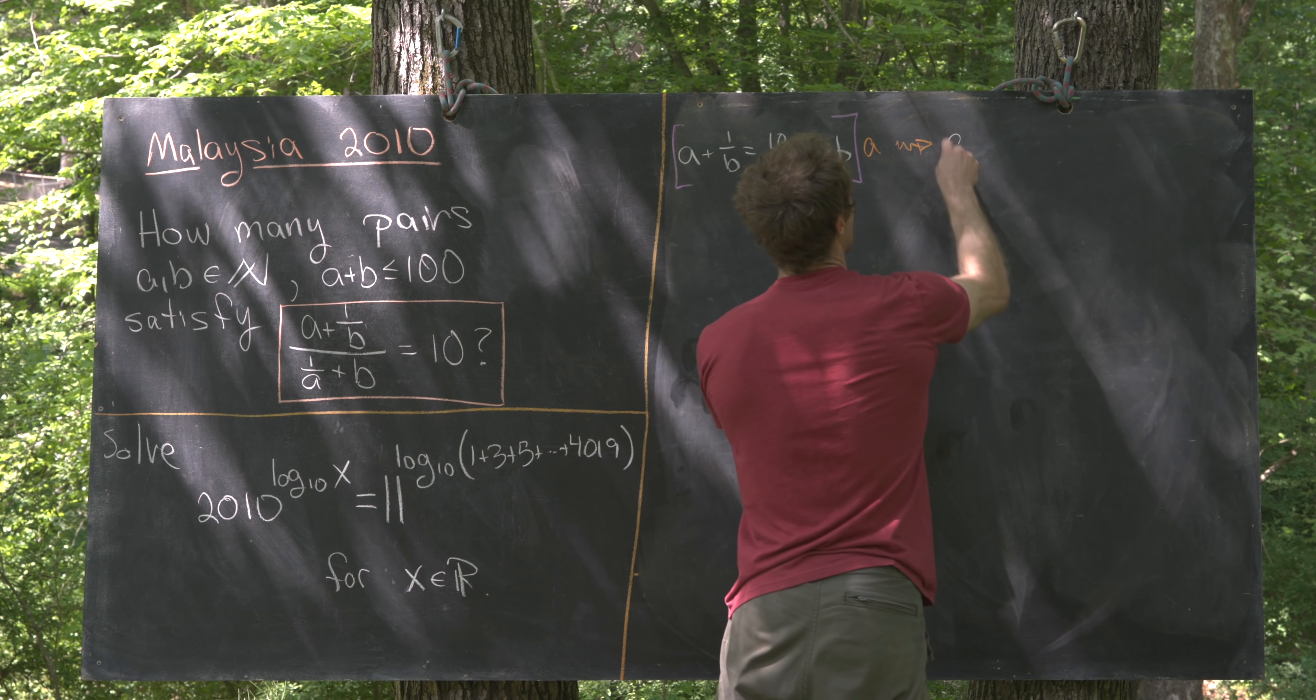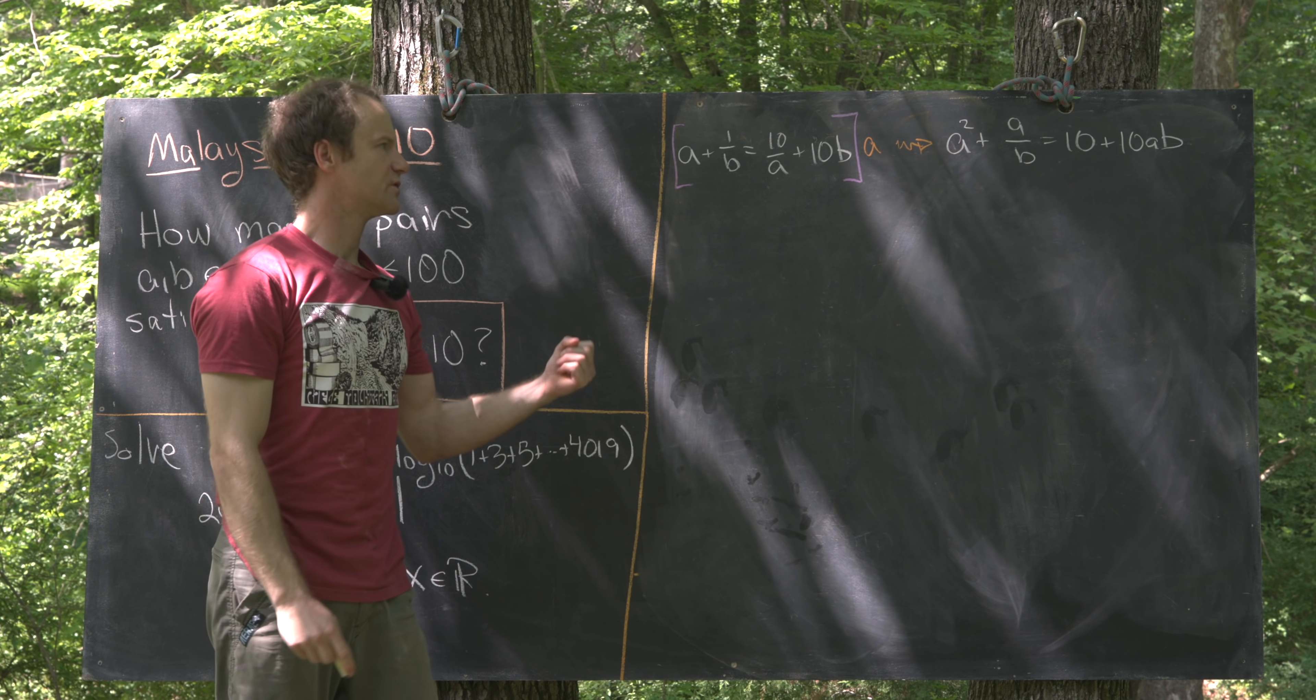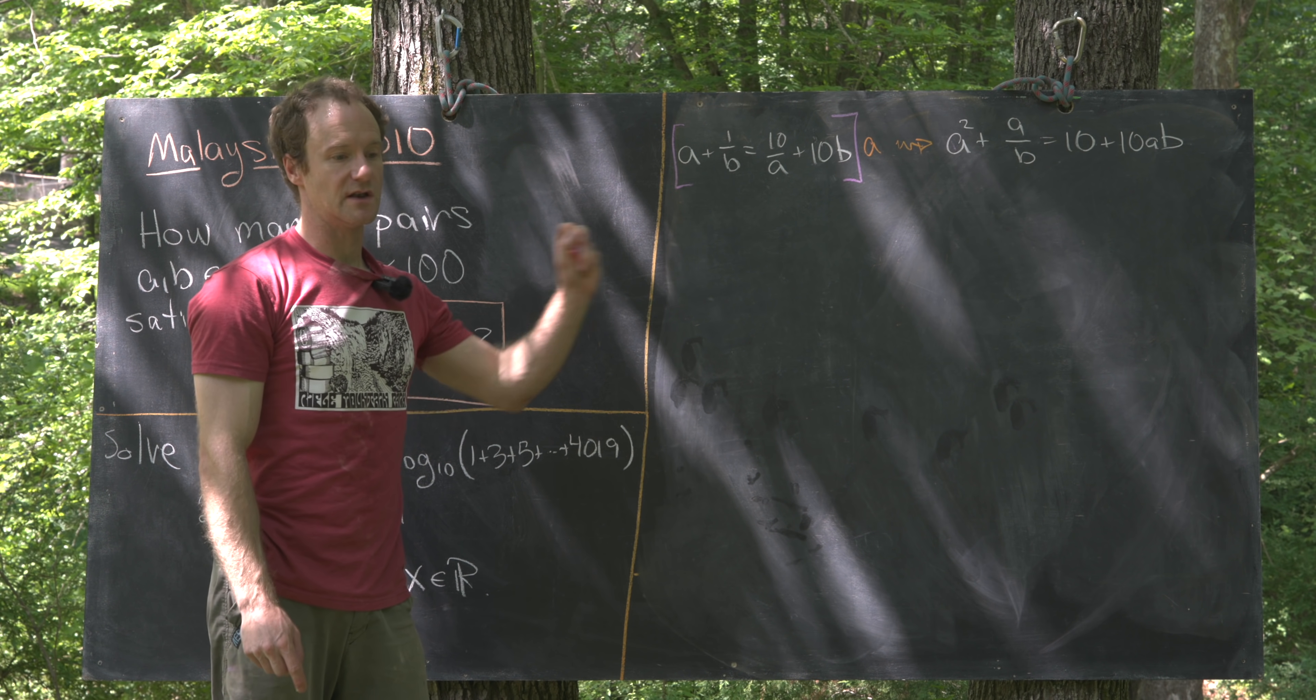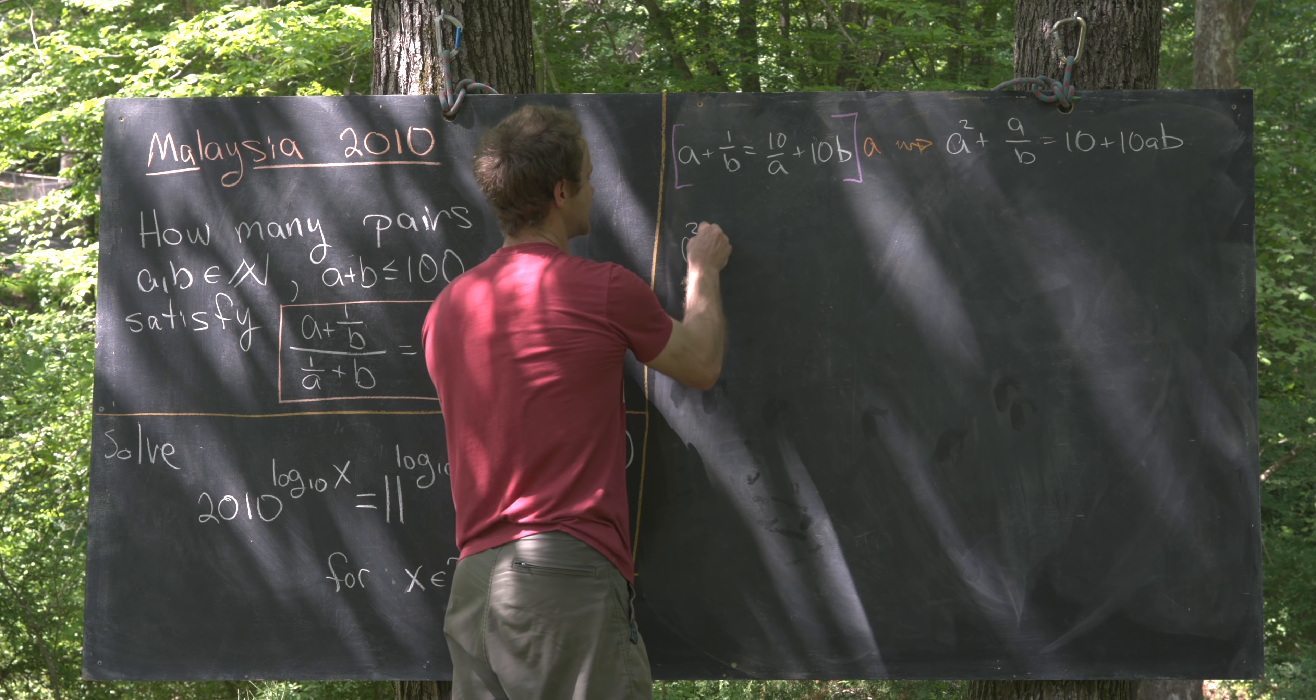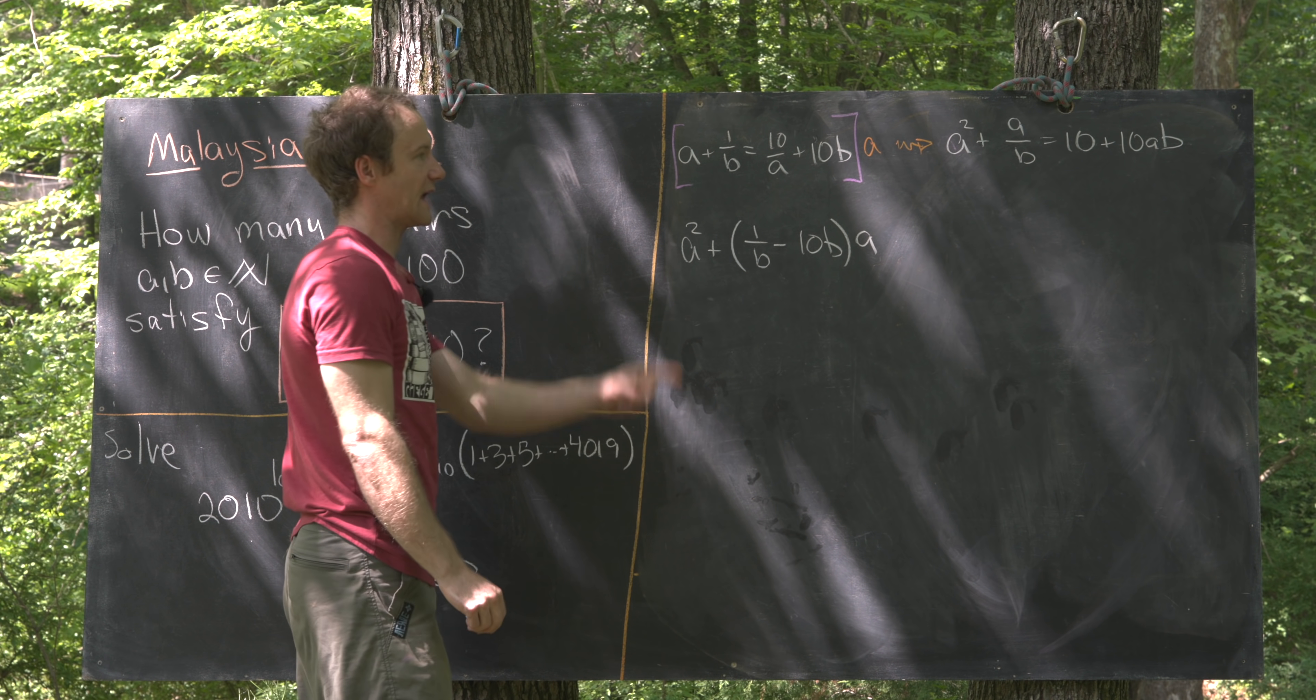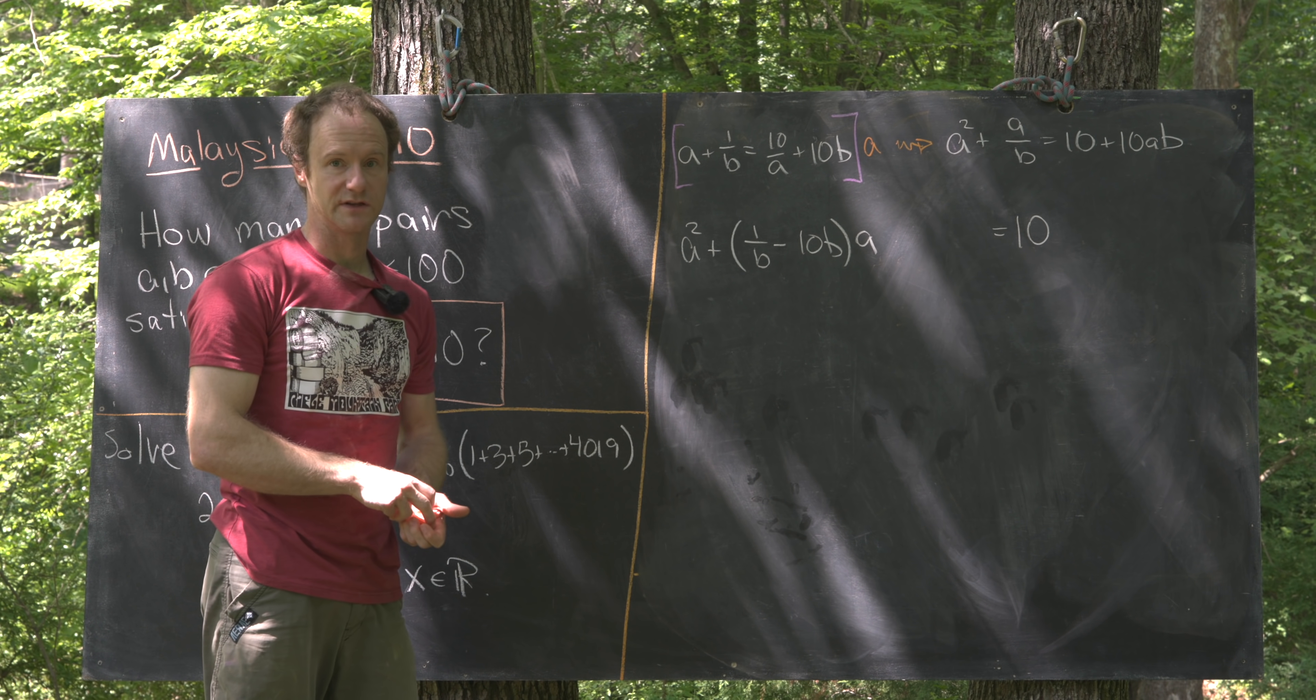Let's see what that gives us. That'll give us A squared plus A over B equals 10 plus 10AB. Next we'll use standard quadratic equation type strategies to solve this. I'll move everything with an A to the left hand side, the number to the right hand side, and then I'll complete the square. So that's going to leave me with A squared plus 1 over B minus 10B times A. There I did a little bit of grouping as I moved the 10AB over, and that needs to be equal to 10.